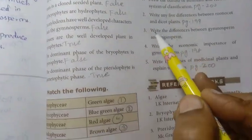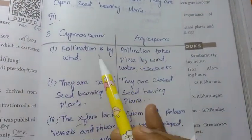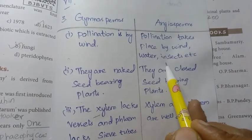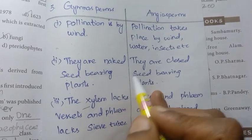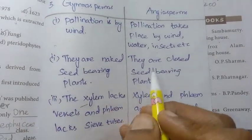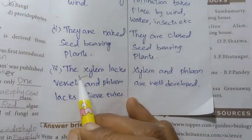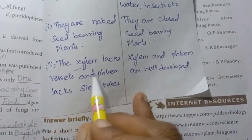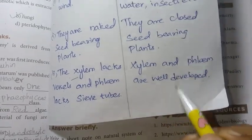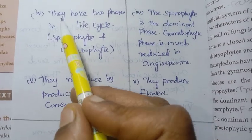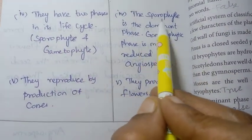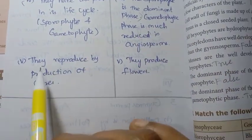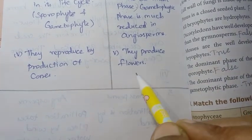Next: differences between gymnosperms and angiosperms. Gymnosperms are naked seed-bearing plants; angiosperms are closed seed-bearing plants. Pollination in gymnosperms is by wind; in angiosperms by wind, water, or insects. Gymnosperms lack vessels in xylem and sieve tubes in phloem; angiosperms have well-developed xylem and phloem. Sporophyte is the dominant phase; gametophytic phase is much reduced in angiosperms. Gymnosperms reproduce by cones; angiosperms reproduce by flowers.